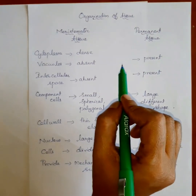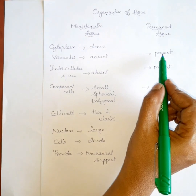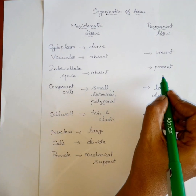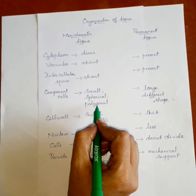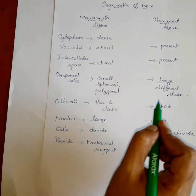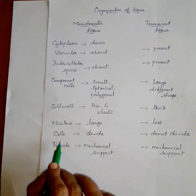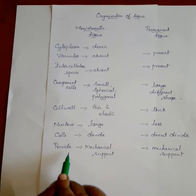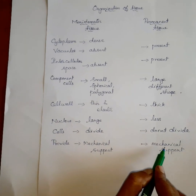Again, repeating: In meristematic tissue, cytoplasm is dense and vacuoles are nearly absent; in permanent tissue, vacuoles are present. Intercellular spaces are absent in meristematic, present in permanent. Component cells are small, spherical and polygonal in meristematic; different shapes in permanent. Cell wall is thin and elastic in meristematic; thick in permanent. Nucleus is large in meristematic; less in permanent. Cells grow and divide regularly in meristematic; do not divide continuously in permanent. Meristematic provides growth; permanent provides mechanical support only.